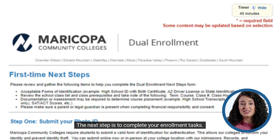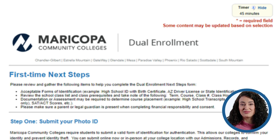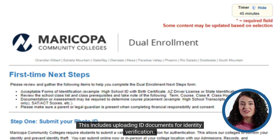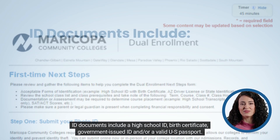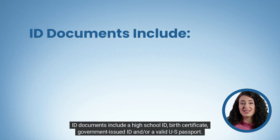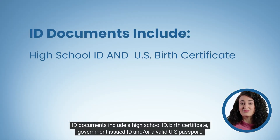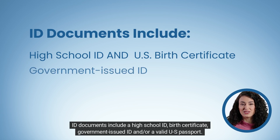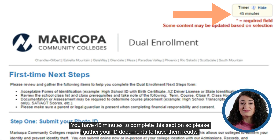The next step is to complete your enrollment tasks. This includes uploading ID documents for identity verification. ID documents include a high school ID, birth certificate, government issued ID, and or a valid U.S. passport. You have 45 minutes to complete this section so please gather your ID documents to have them ready.